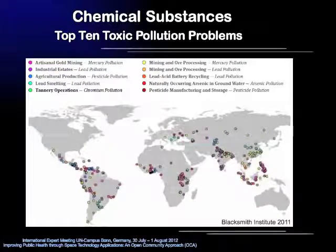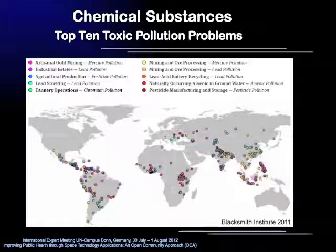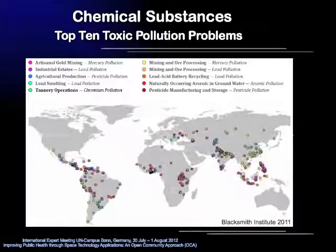The Blacksmith Institute documents in its yearly report over 600 of the world's worst polluted places. In the recent 2011 report, the top 10 toxic pollution problems are heavy metals such as mercury, lead, and chromium, as well as arsenic and pesticides. Although distribution patterns of mercury and pesticides show highest concentrations in the USA and Europe, the worst polluted places can be found mainly in southern regions such as Latin America, Africa, and Southeast Asia.